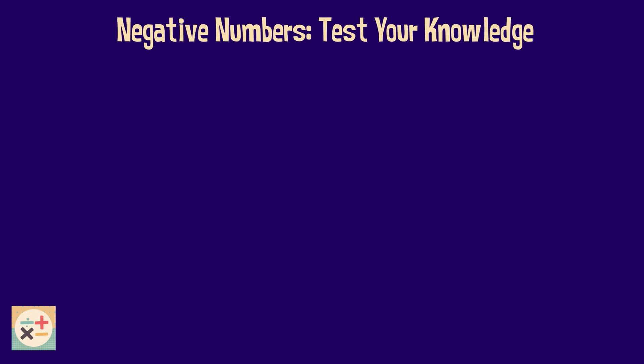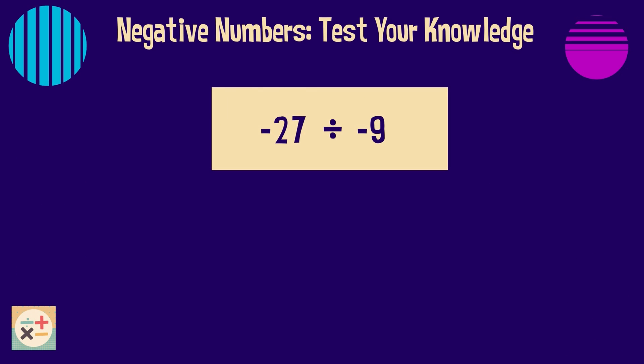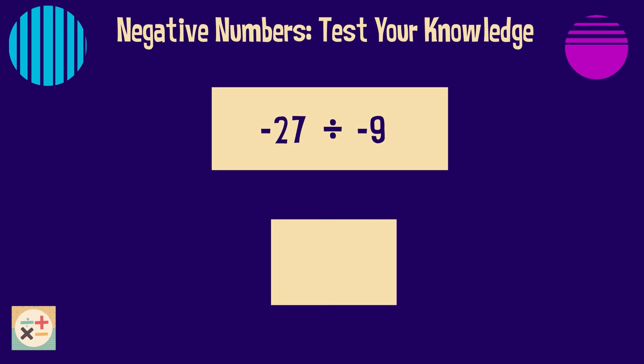Question 3. Work out minus 27 divided by minus 9. The answer is 3.